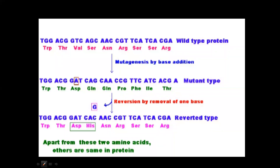For example, originally the sequence was TGG, ACG, GTC, where GTC codes for valine. A base A is added, shifting the frame so that GAT now codes for aspartic acid, and from the point of addition all the amino acid sequence changes — valine becomes aspartic acid, then glutamine, proline, phenylalanine, isoleucine, and so on. The protein becomes totally non-functional from the point of addition. To reverse this frameshift mutation, one base is removed a few steps away from the point of addition.